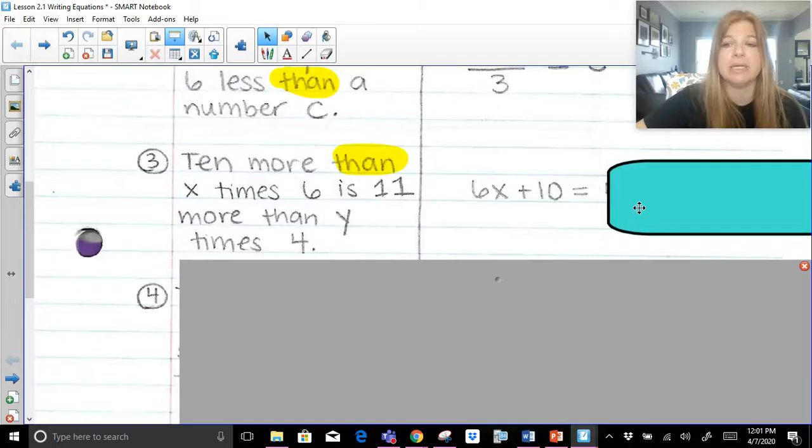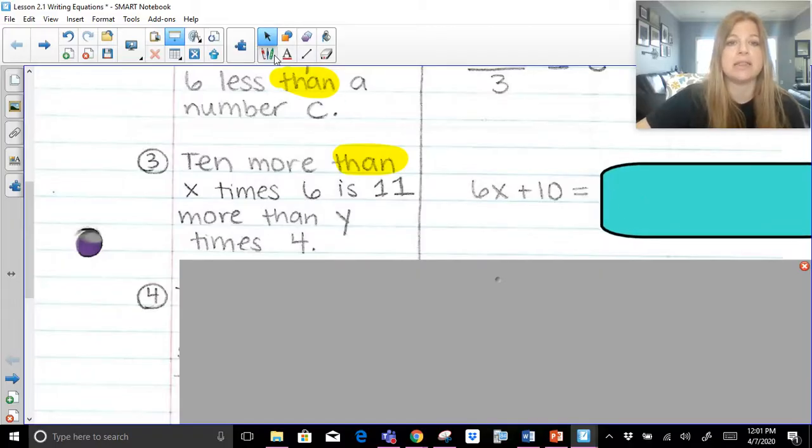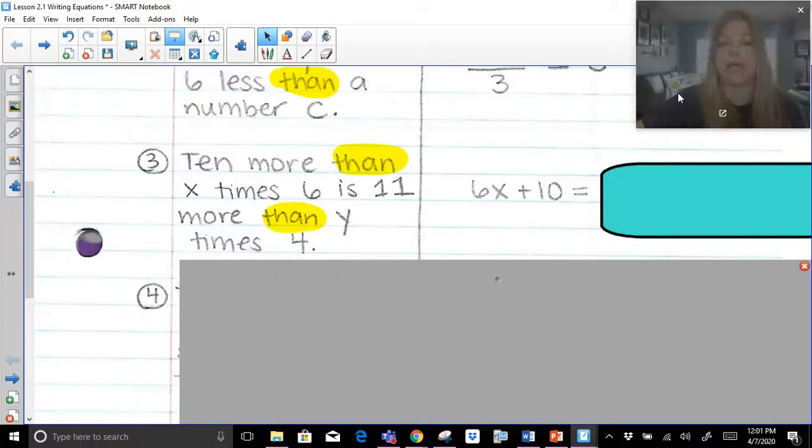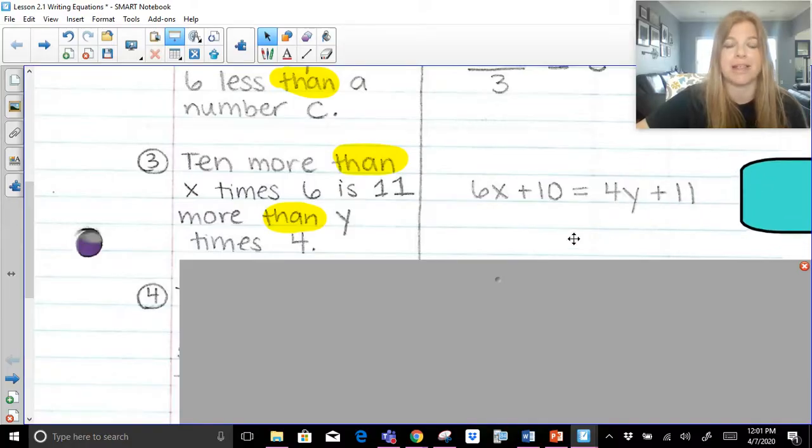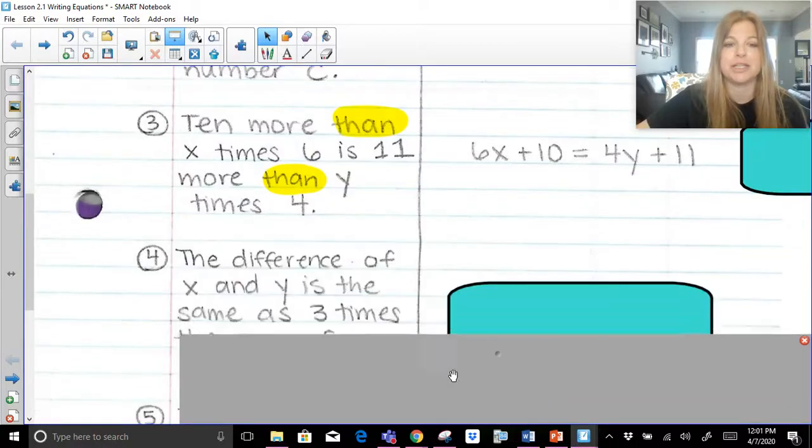Is is my equal sign. And then it's 11 more than, another flipping word, 11 more than y times 4. So y times 4 would be 4y. And if I'm doing 11 more than y times 4 or 4y, it would look like 4y plus 11. Let's try the next one.